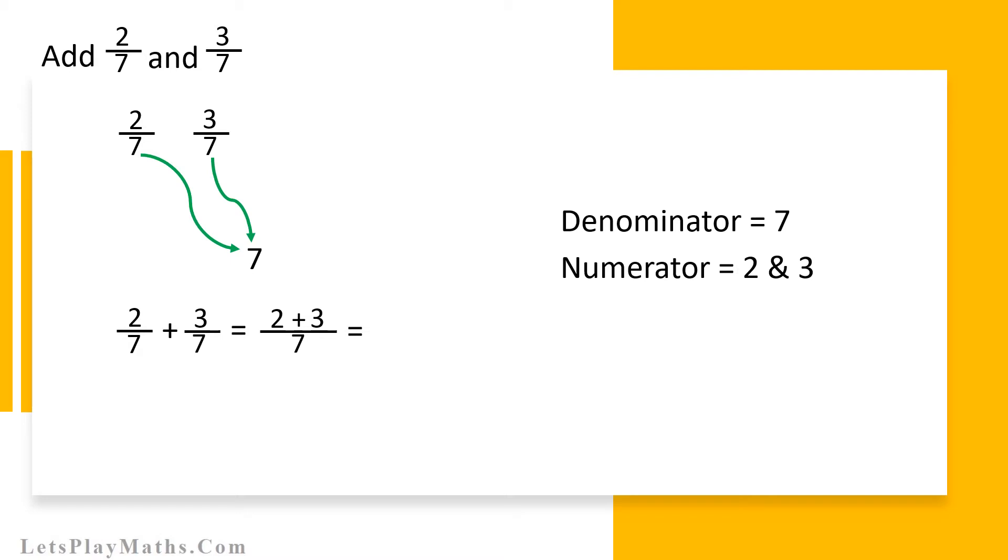That is, the numerator of the result is number 5 and the denominator is number 7. So the answer equals 5 by 7.